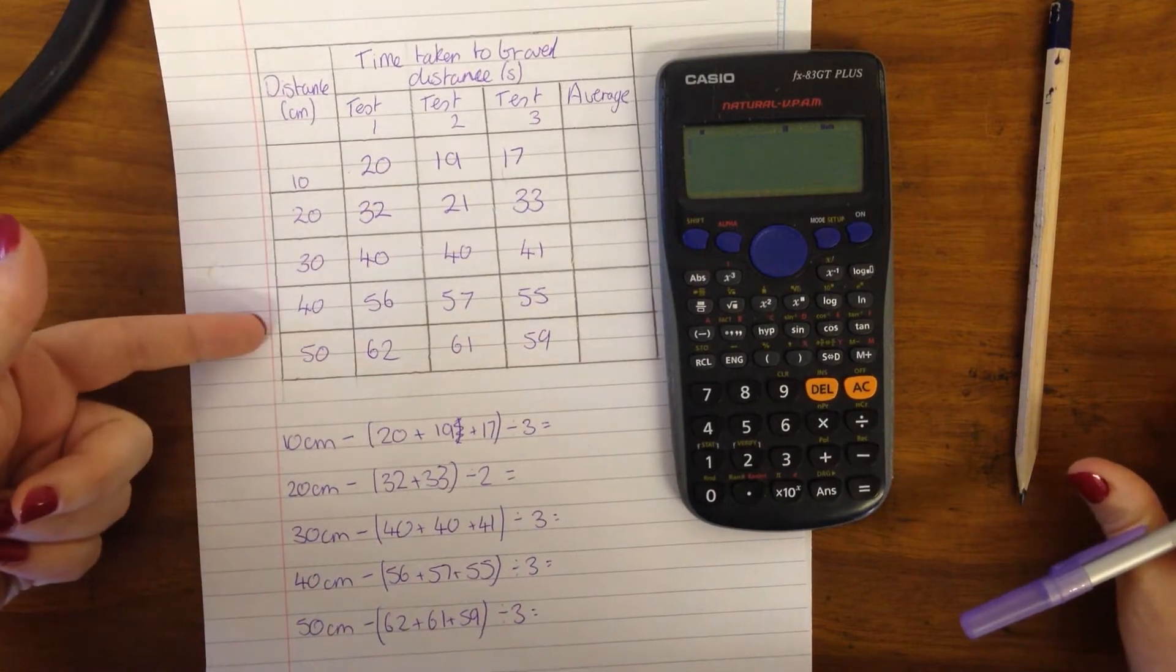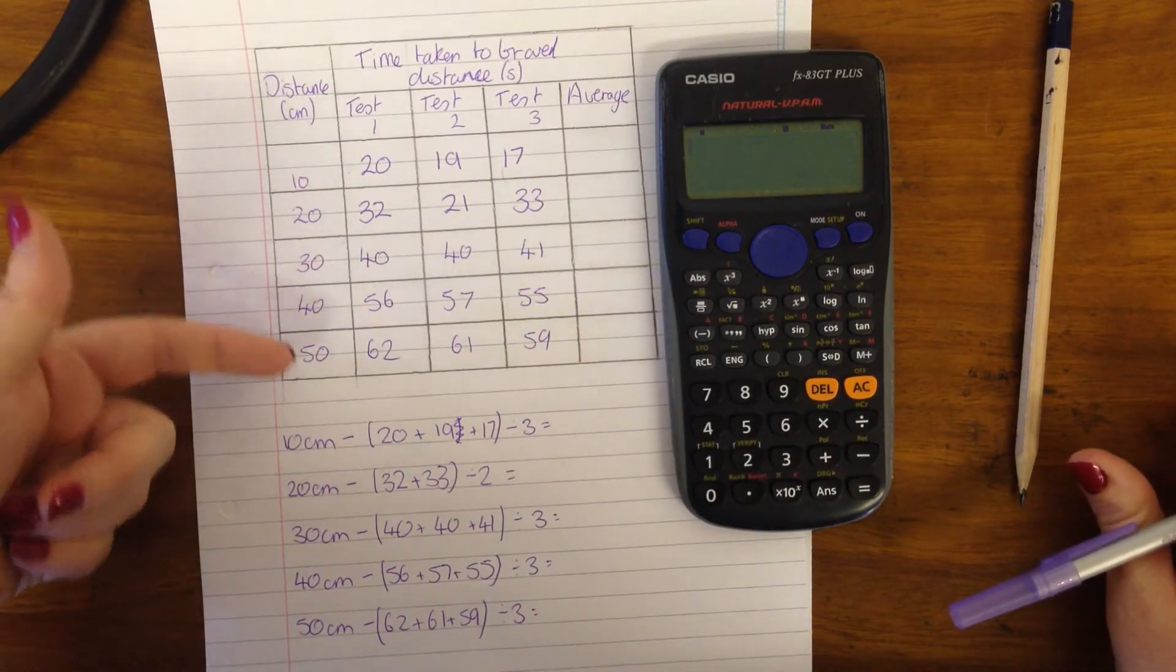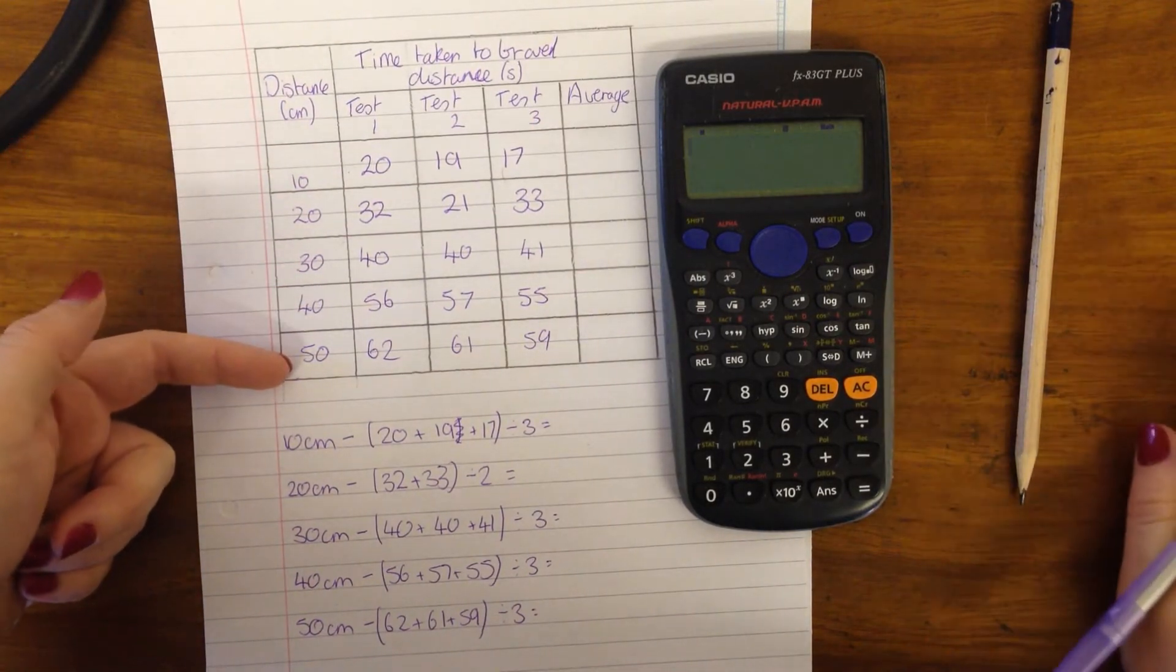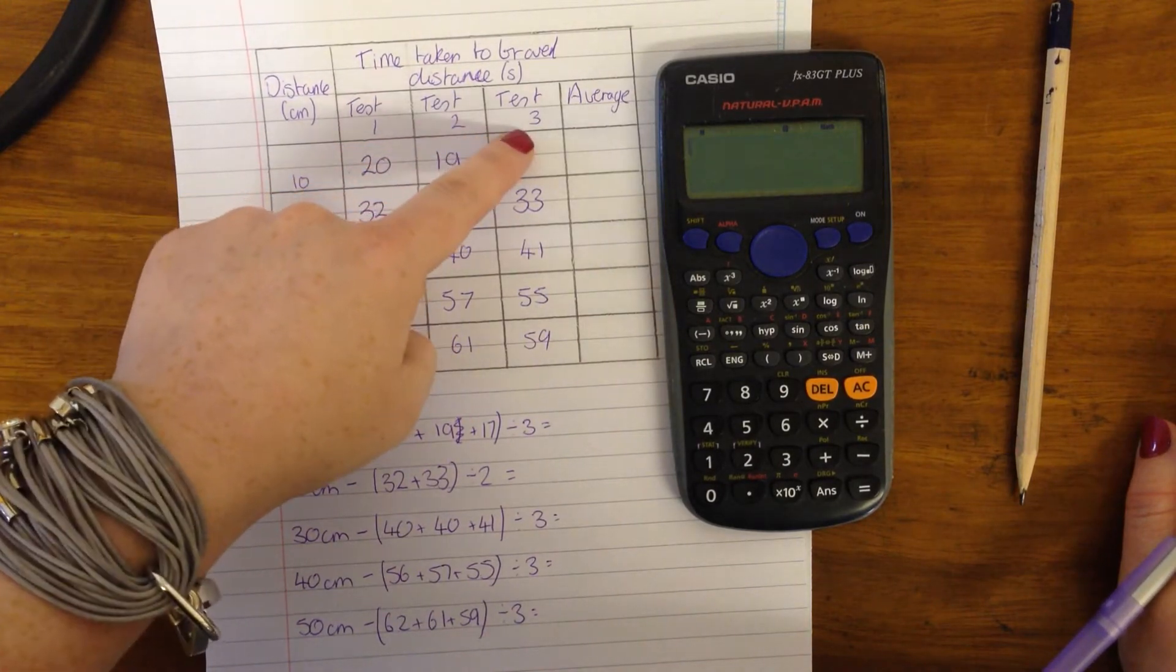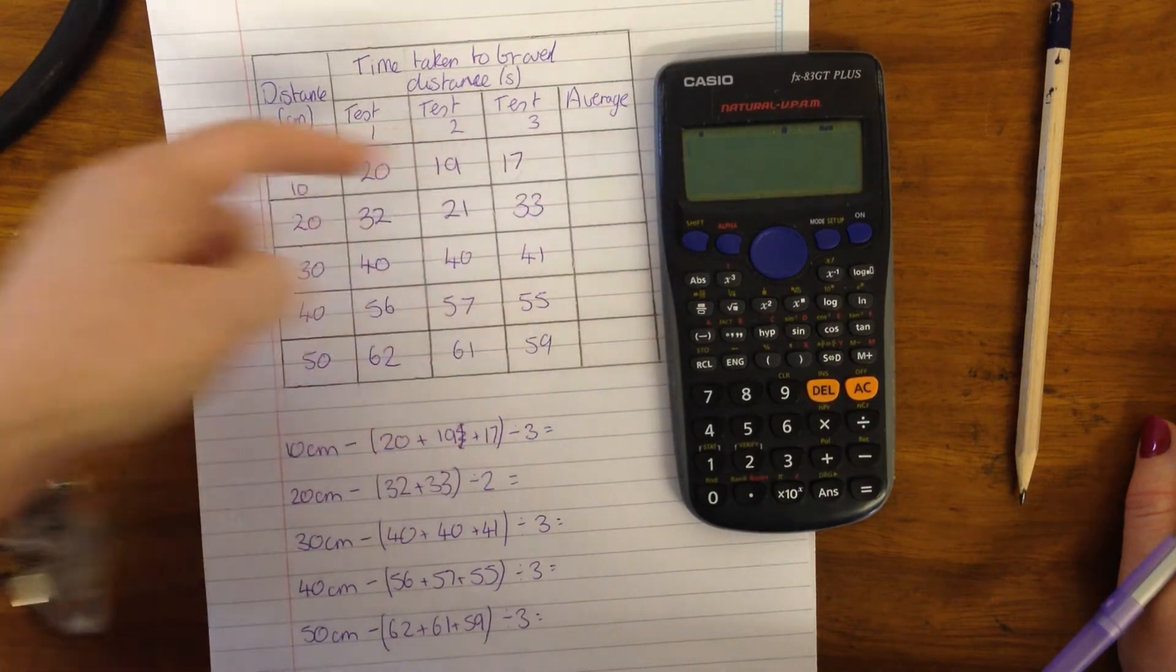We can see we have our distance down the side: 10, 20, 30, 40, 50. Five is a good number of runs for different experiments because it gives you a nice graph. I did my three tests here and now we have to work out the average.